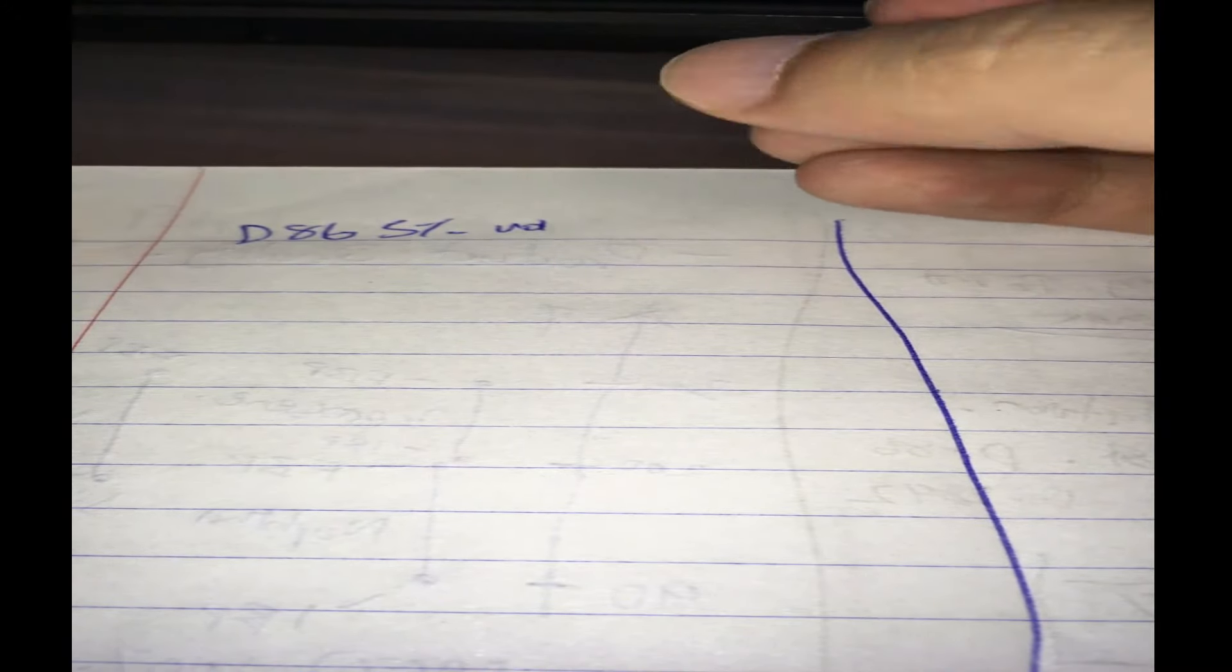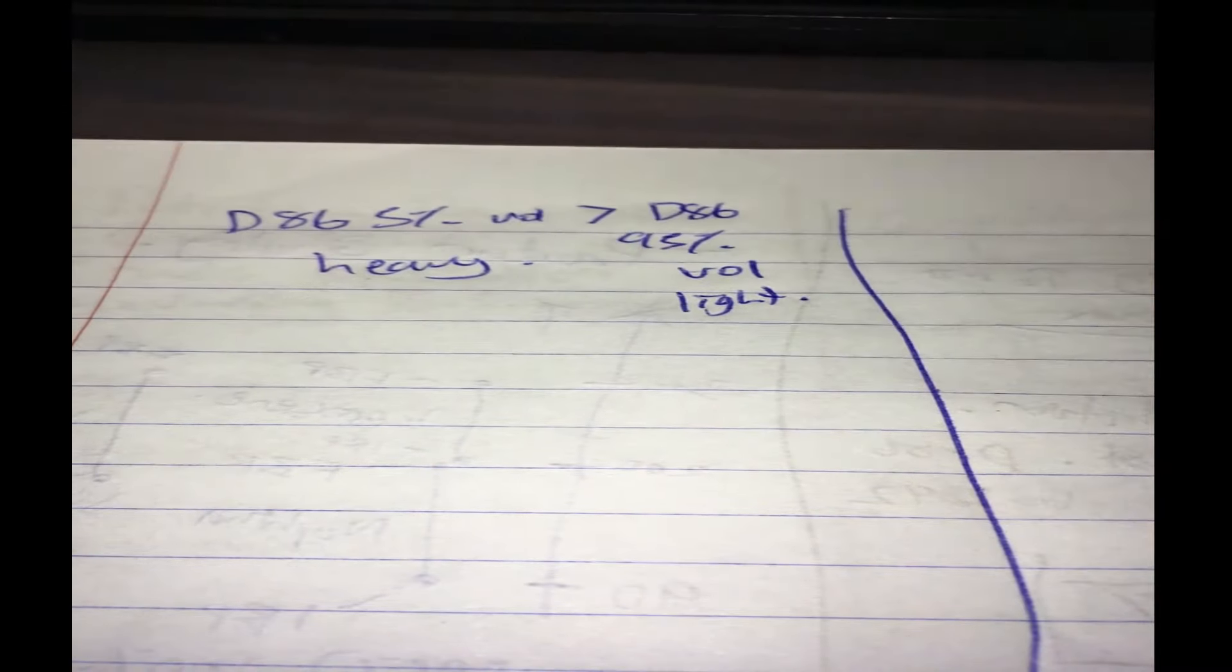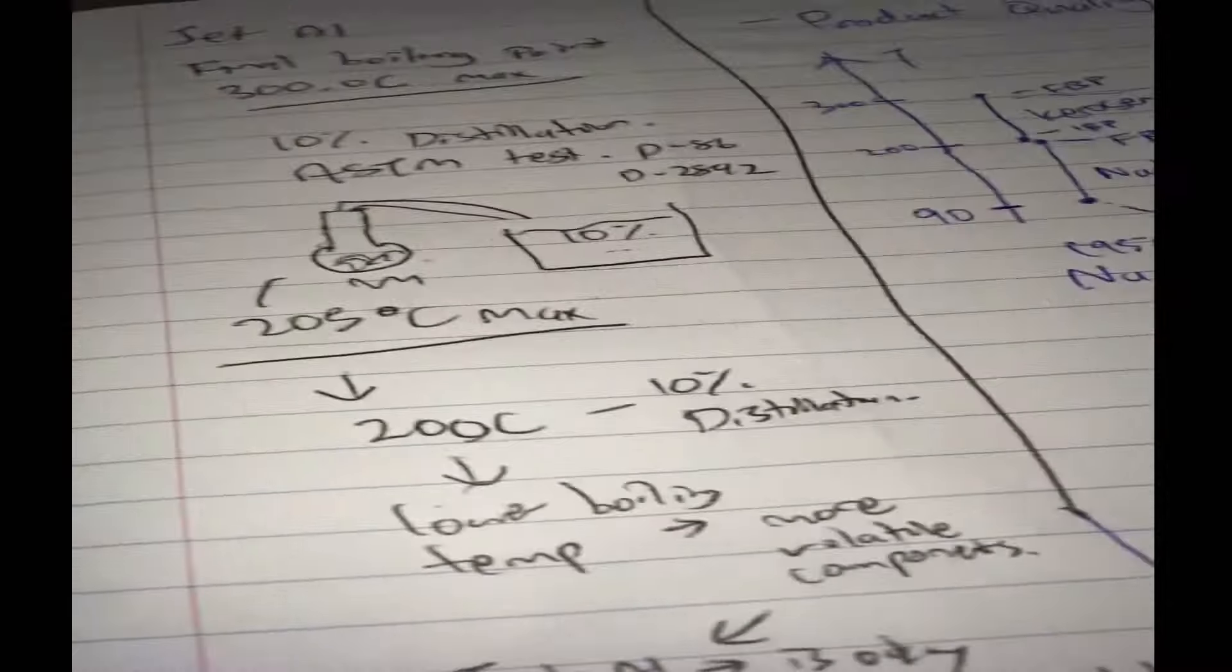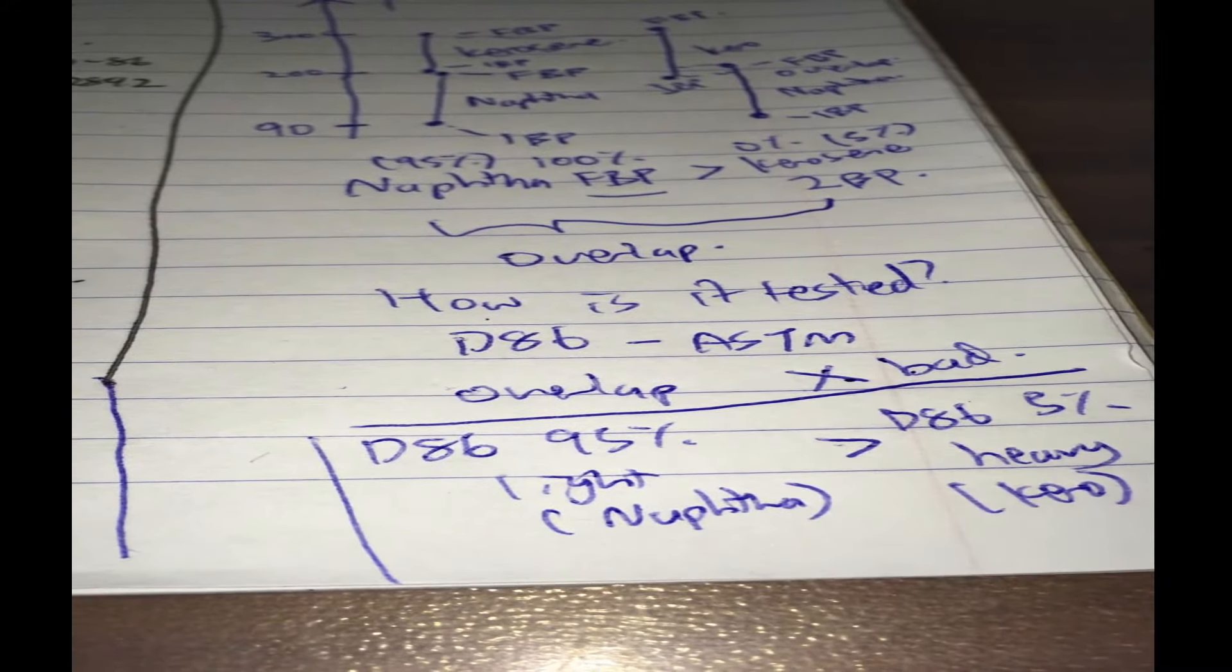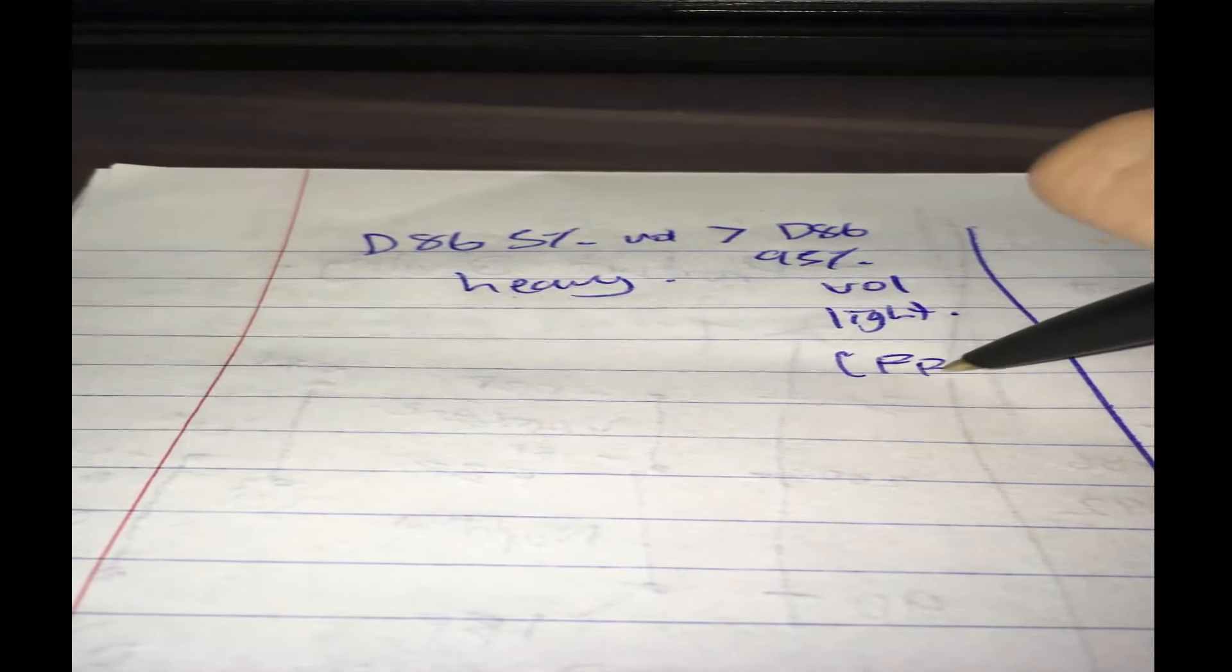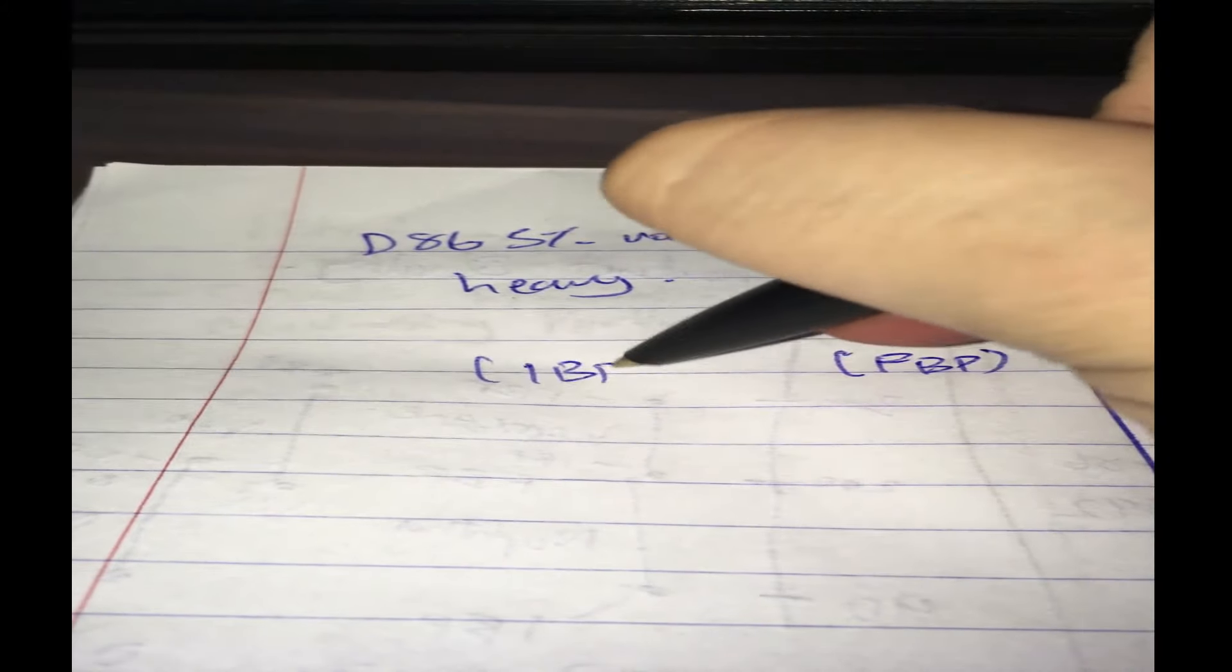What you want instead is your D86 5% volume - that temperature, this is similar to the initial boiling point just a little higher than the initial boiling point - and this should be more than D86 95% volume of the light. So the 5% usually refers to the heavy cut and then 95% usually refers to the light cut. Okay, so this 95% you can remember it as close to final boiling point, this one is similar to the initial boiling point.